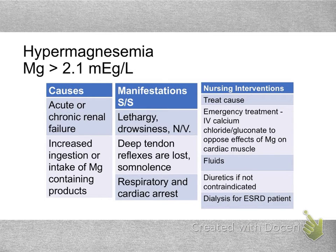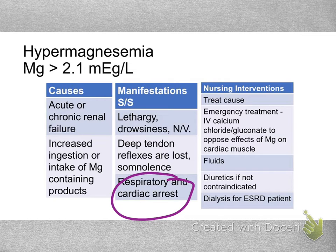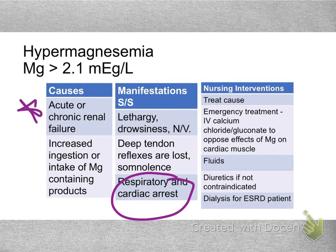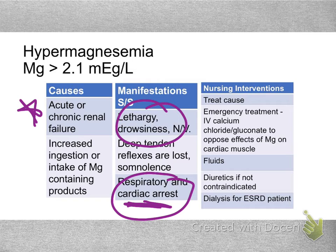Magnesium is another electrolyte very important for cardiac health. High magnesium often results from excessive intake or something inhibiting the body's ability to excrete it — most commonly kidney failure, where the body holds onto magnesium similarly to potassium. We can see some neurological effects, but we're really worried about dysrhythmias.